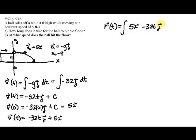So the antiderivative is going to give us 5ti minus 16t squared j because we're going to add 1 to the t and divide by the exponent, plus c again.